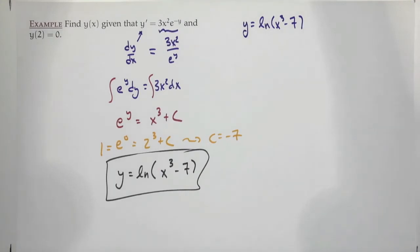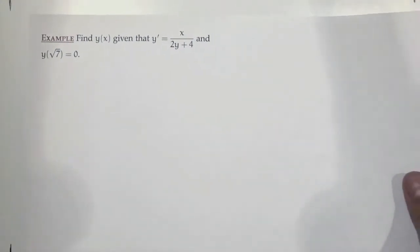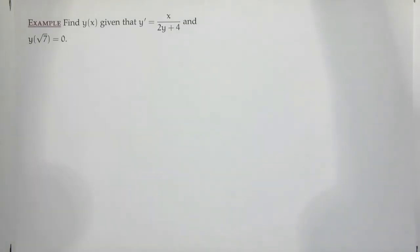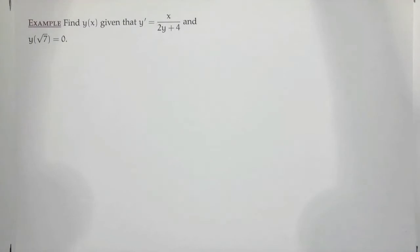Let's do another one. Find y(x) — we have to solve all the way down to y, we can't leave it in implicit form. Given y' = x/(2y+4) and y(√7) = 0.